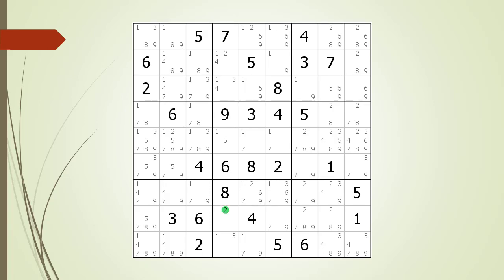After scanning each row for a single remaining candidate, we find a Naked Single on row eight, column four.